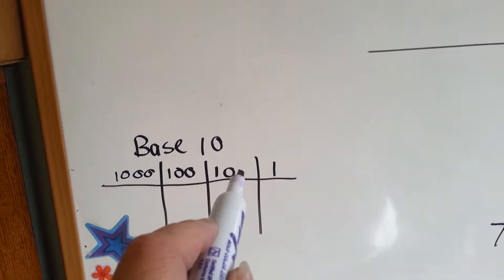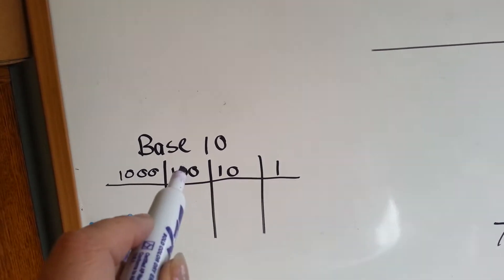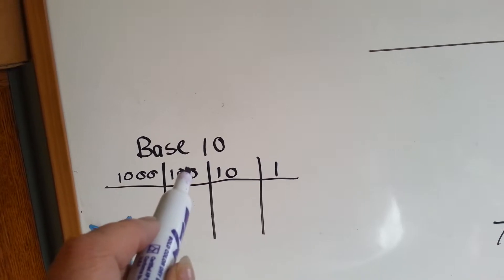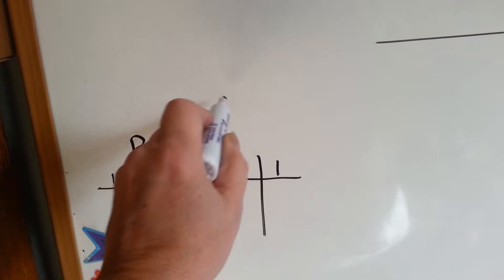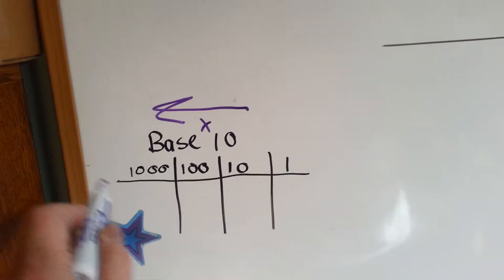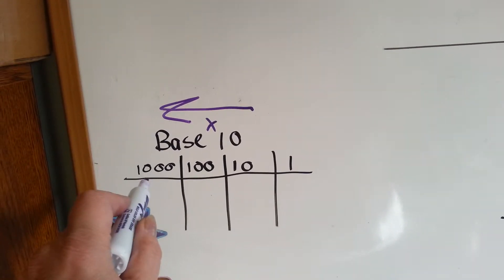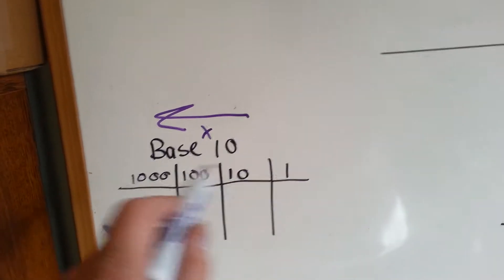1 times 10 is 10. 10 times 10 is 100. 100 times 10 is 1,000. And we just keep multiplying by 10 as we go to the left to get to the next column. 1,000 times 10 is 10,000. That's base 10.